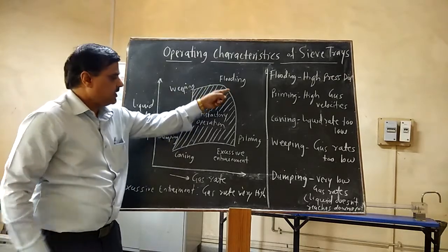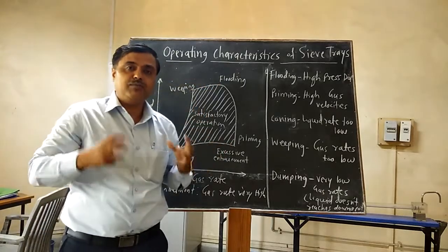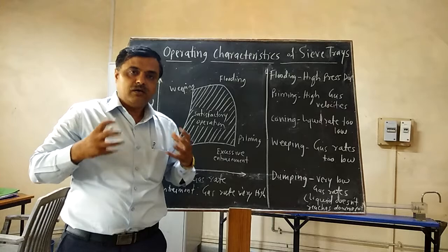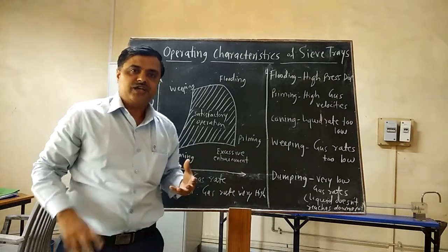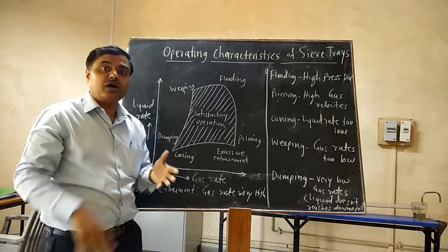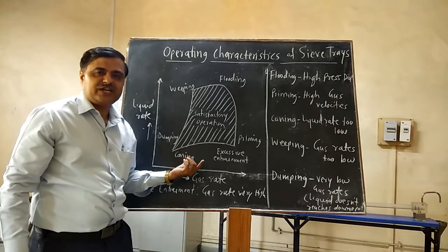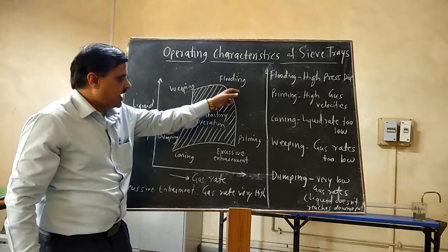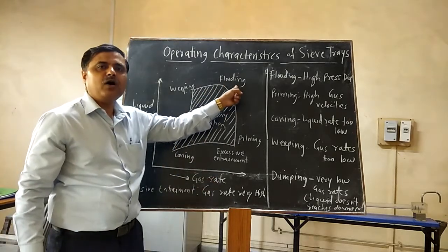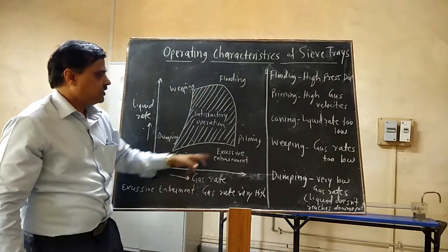In flooding, the gas rate and the liquid rate are very high. Because of this, the pressure drop increases and a flood-like situation occurs in the column, and the column will not work satisfactorily. So at a very high gas rate and liquid rate, the flooding condition occurs in the column.